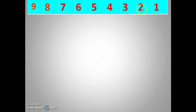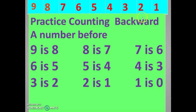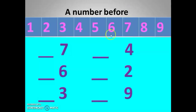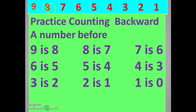Now next is backward counting practice. The numbers are given in counting backward order. If you practice this, the before number will be very easy. When I ask what is before nine, you can easily say eight. Practice along with me: nine, eight, seven, six, five, four, three, two, one. Once again: nine, eight, seven, six, five, four, three, two, one.